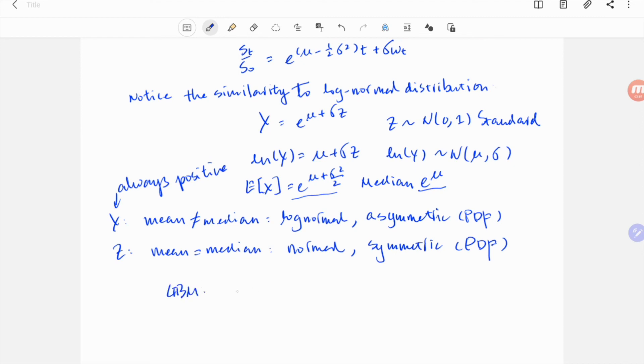Now, unsurprisingly, the expected value of st has the variance term in the exponent as well. And since variance of sigma wt is sigma squared t, it offsets the sigma squared t in the first term, and we arrive at e to the mu t. So the expected value is just the drift.